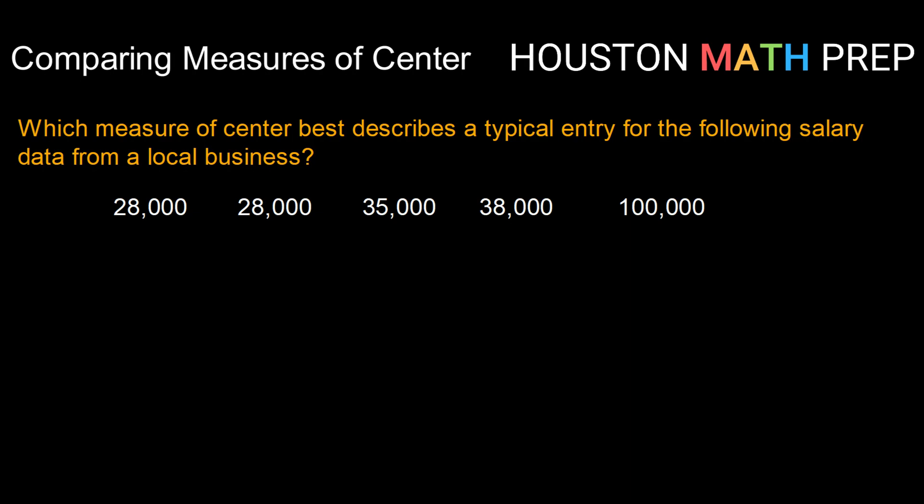So let's start with the mean. To calculate the mean in this case, which is going to be our x-bar, we would add up all of our data values and divide by how many there are, which is 5. So that would be $28,000 plus $28,000 plus $35,000 plus $38,000 plus $100,000, and then all of that divided by 5. That gives us $45,800 as our average. So our mean data value, or our mean salary for this, is $45,800.